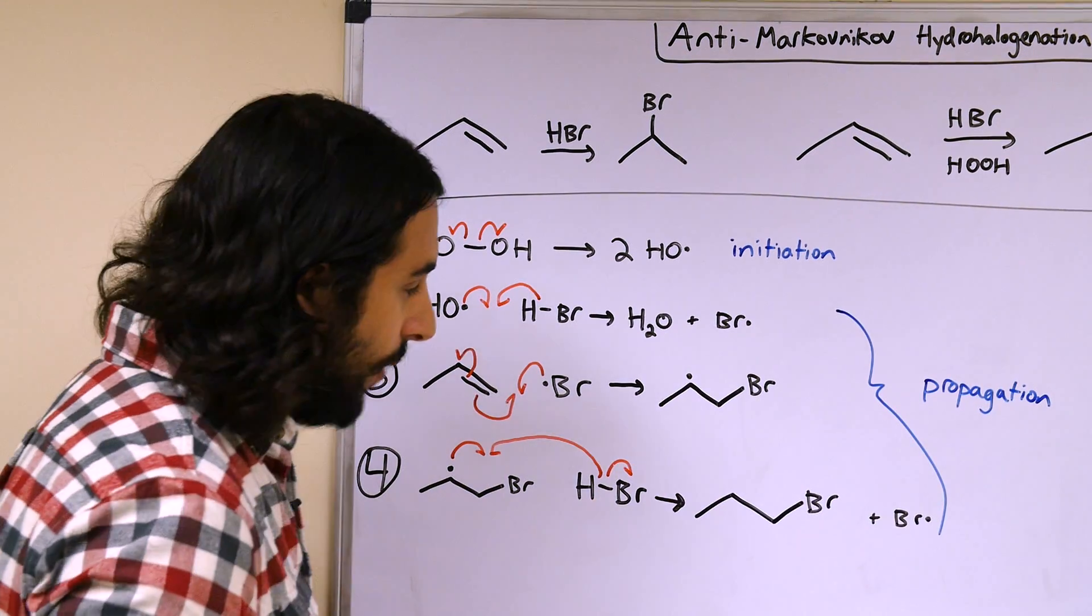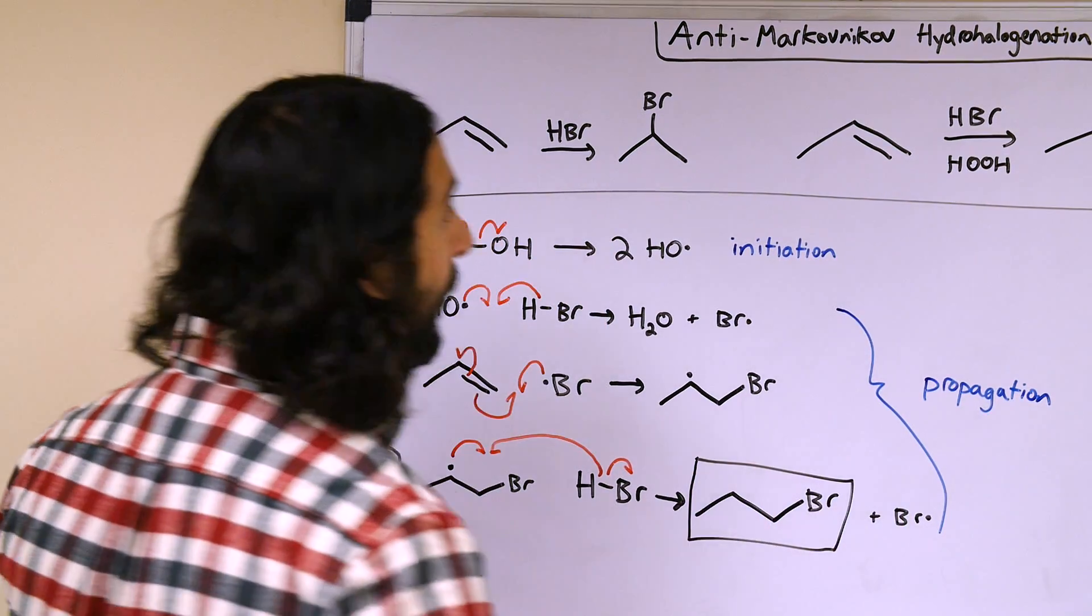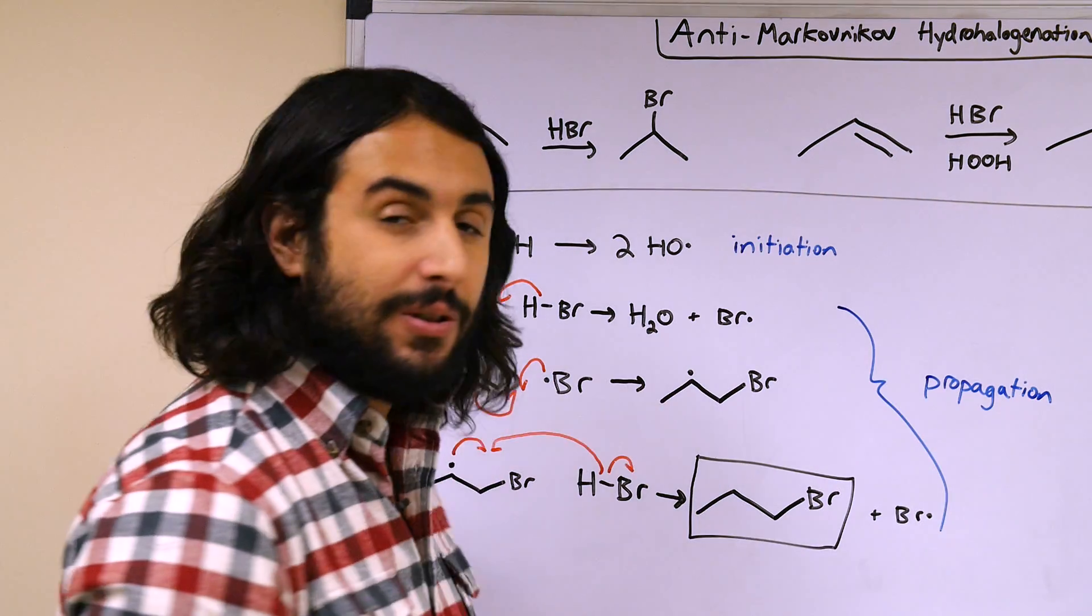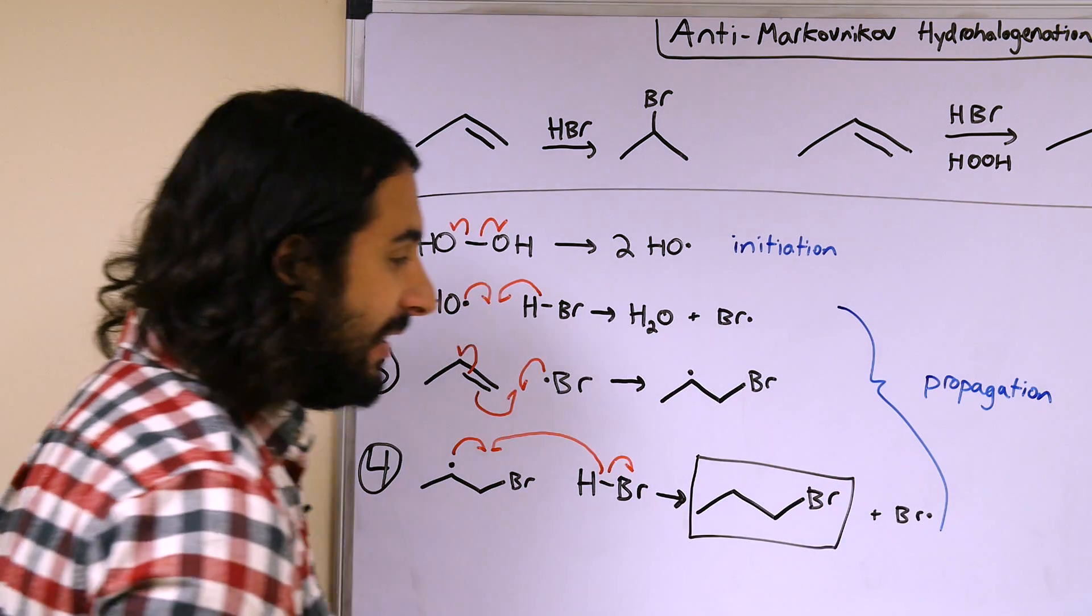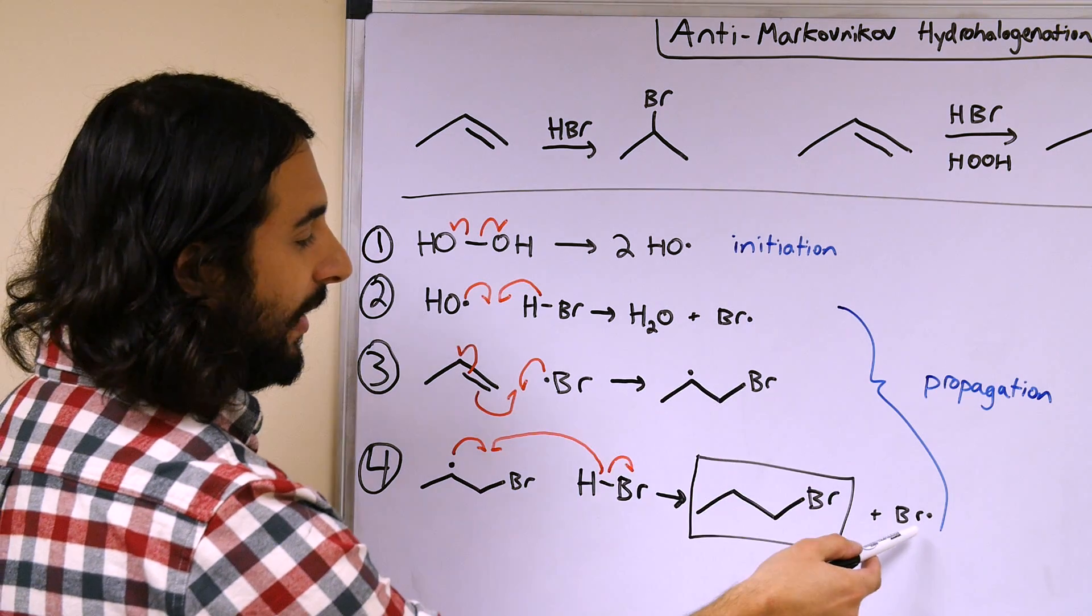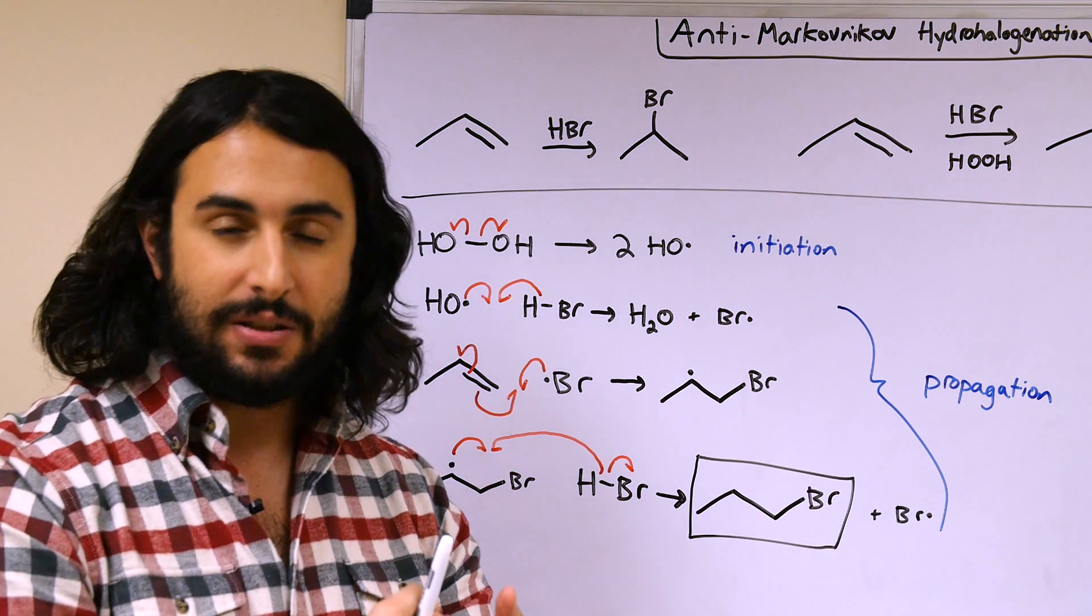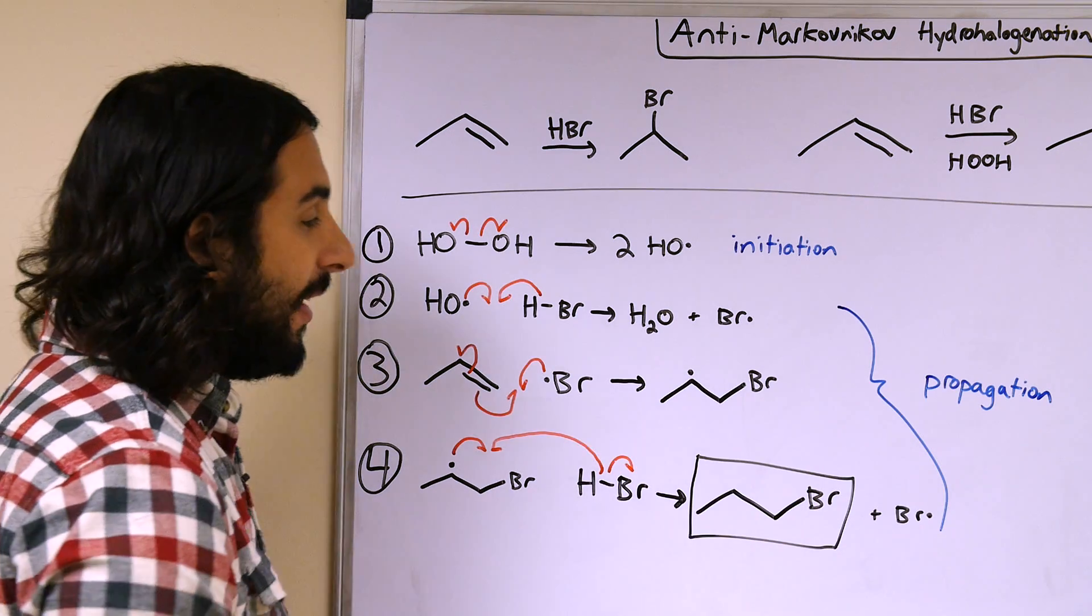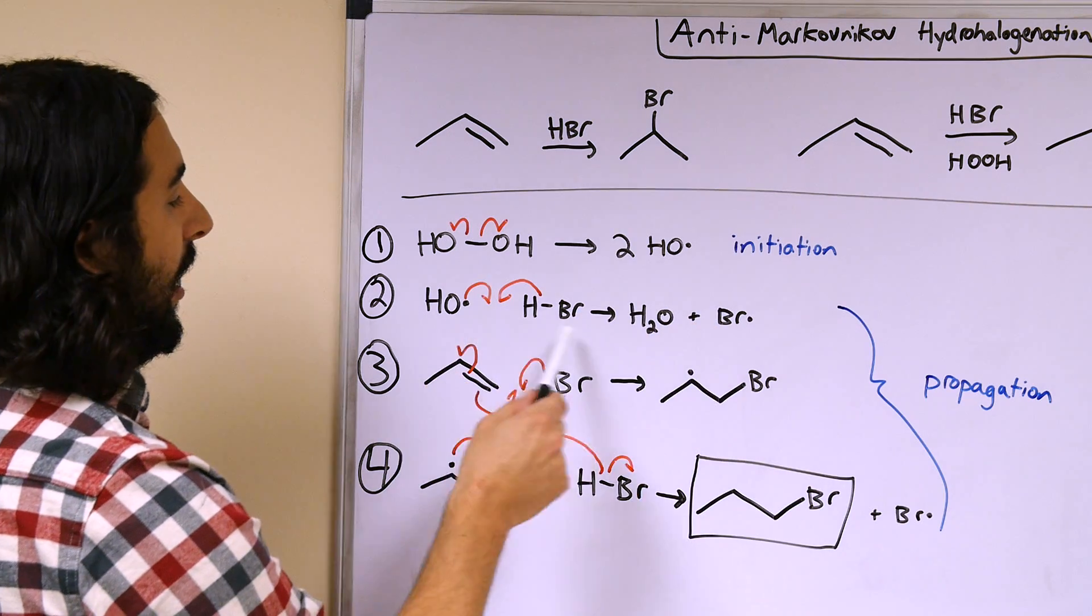And so we've gotten to our product here. This is our anti-Markovnikov hydrohalogenation product, regiospecific to be the less substituted alkyl bromide of the two possibilities. And we've managed to do it all with propagation steps. There could be termination steps – choose anything – this radical, bromine radical, hydroxyl radical, anything. If two radical species meet, they'll terminate, but none of them were needed in the mechanism generating the product so we didn't draw them.